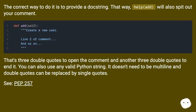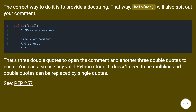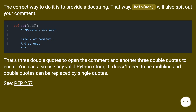The correct way to do it is to provide a doc string. That way, help() will also spit out your comment. That's three double quotes to open the comment and another three double quotes to end it. You can also use any valid Python string. It doesn't need to be multiline, and double quotes can be replaced by single quotes. See PEP 257.